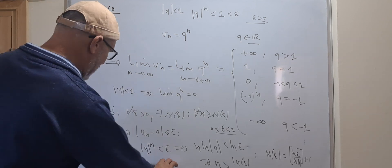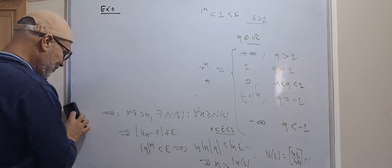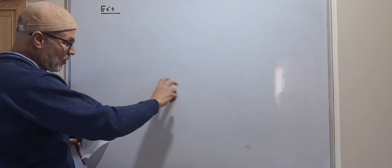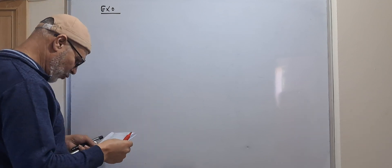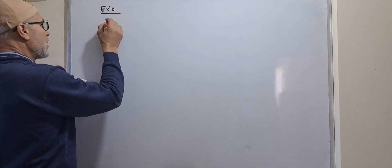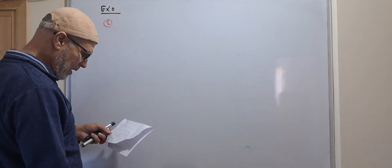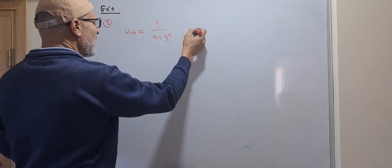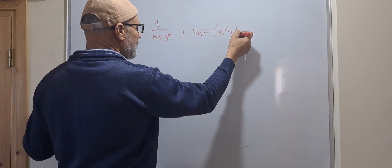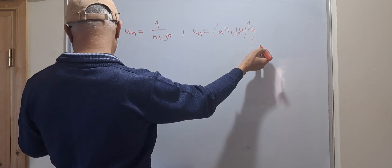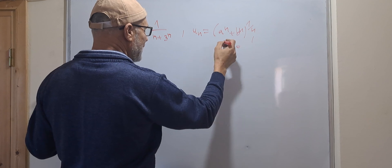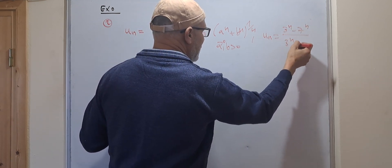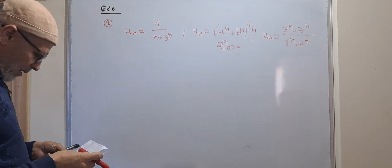The second question of exercise 4 is to determine limits involving plus infinity and minus infinity — we use the same technique. Evaluate the limit of: first, u_n equal to 1 over n plus 3 to the power n; second, u_n equal to (a^n + b^n)^(1/n); and the last one, 3^n minus 7^n over 3^n plus 7^n, when n goes to plus infinity.